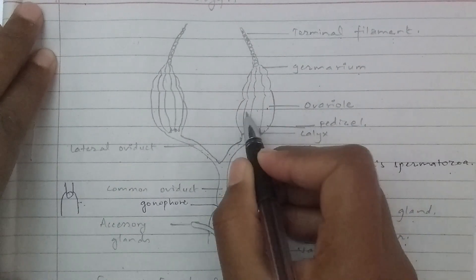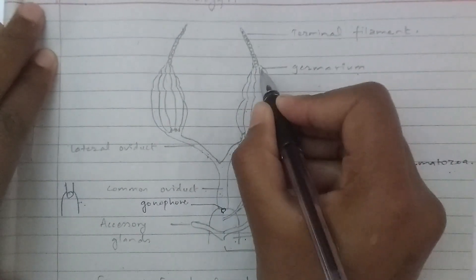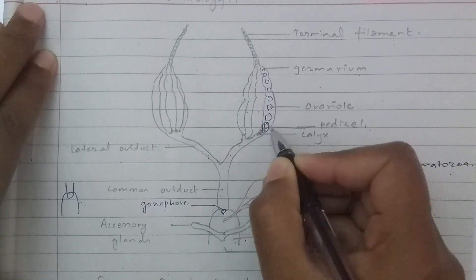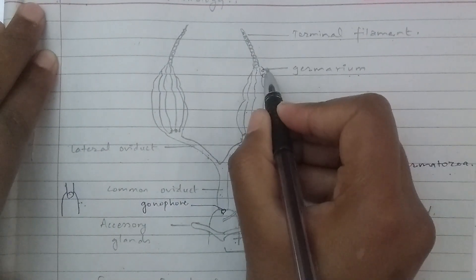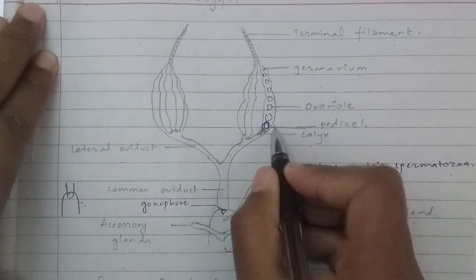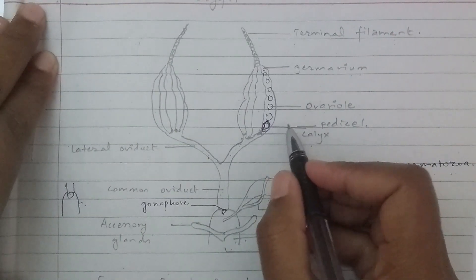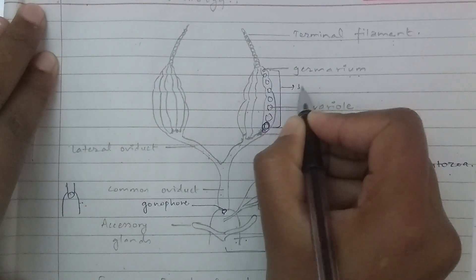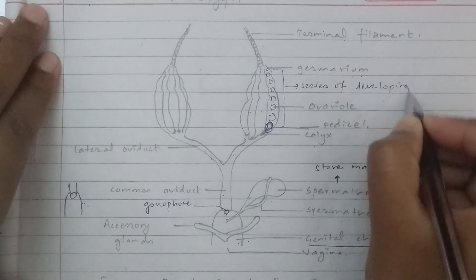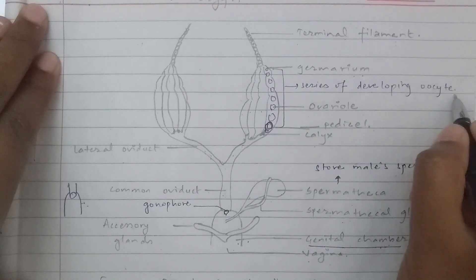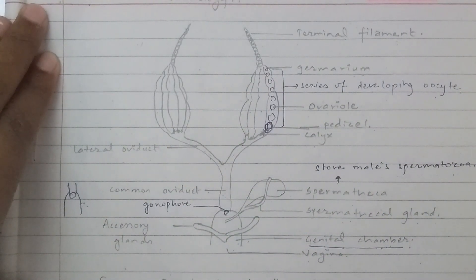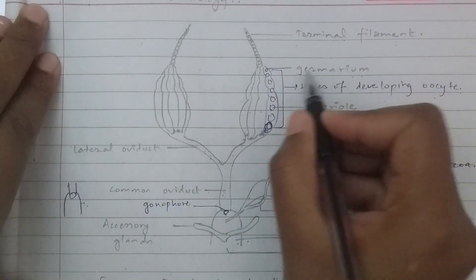The ovariole cluster is present in the form of the ovariole. The developing ovariole is present as an ovariole cluster. The germarium contains the youngest oocyte sites. The pedicel is present at the base of the ovariole. An ovariole contains a series of developing oocytes, and the oocytes are surrounded by epithelium forming follicle cells.